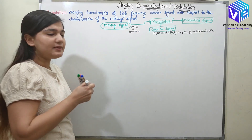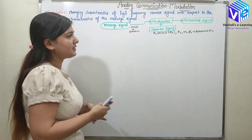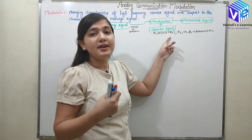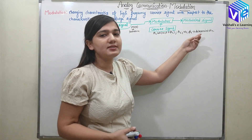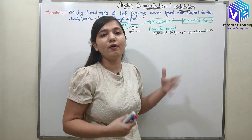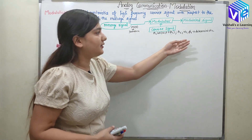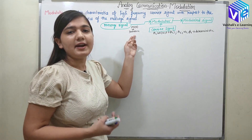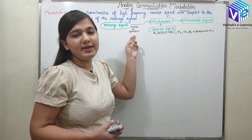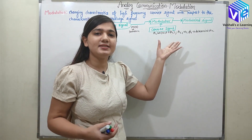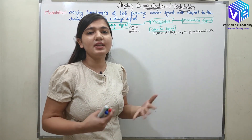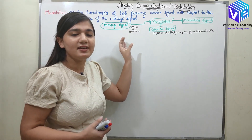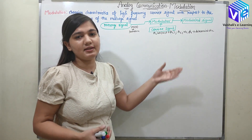Now when m(t), which is a random signal, is multiplied with a high frequency deterministic signal, this deterministic signal would also become random and the randomness is dictated according to the randomness of the message signal. It's again a message signal which is now at high frequency — I just converted this message signal to a high frequency signal.